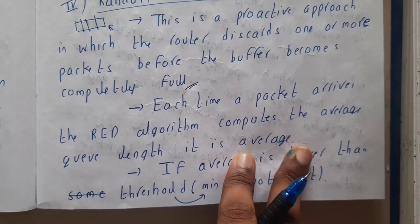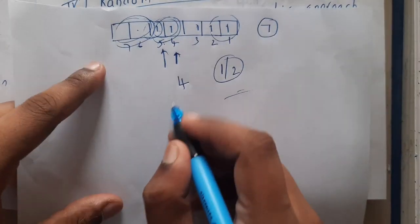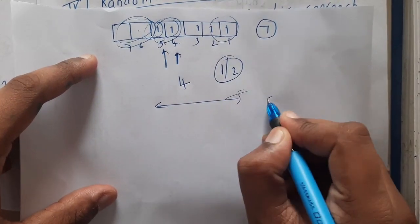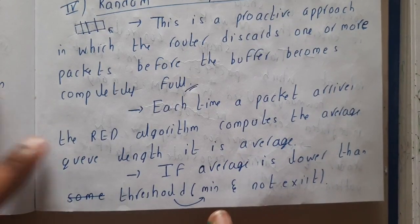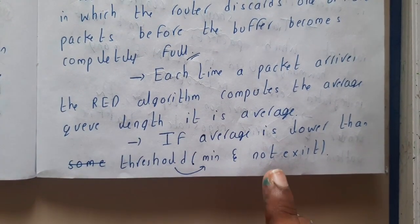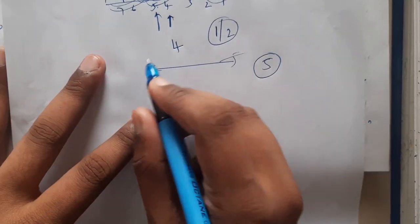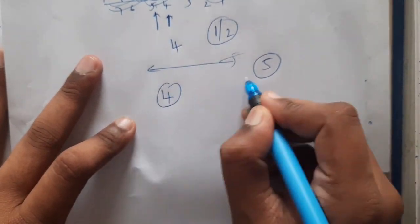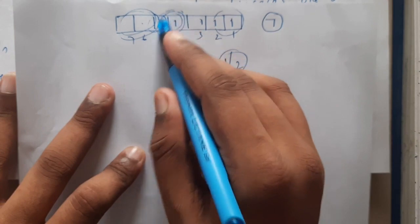For this example, five is our queue length. If average is less than the threshold (minimum), assume our threshold is four. If it's greater, you need to discard some packets. That's the whole logic.